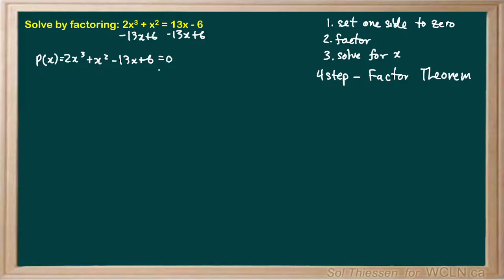In step one of that process we try to find a root of the polynomial and its corresponding factor. When guessing at potential roots, the numerators should be factors of the constant term. The constant term is 6, which has factors plus or minus 1, plus or minus 2, plus or minus 3, and plus or minus 6. The denominators should be factors of the leading coefficient, which is 2, with factors plus or minus 1 and plus or minus 2.